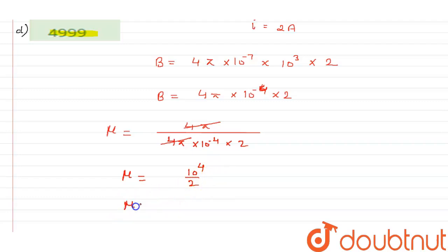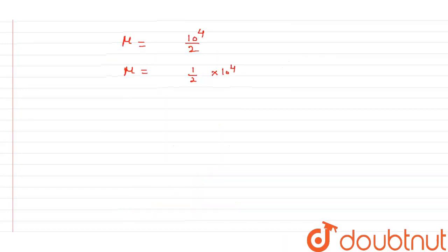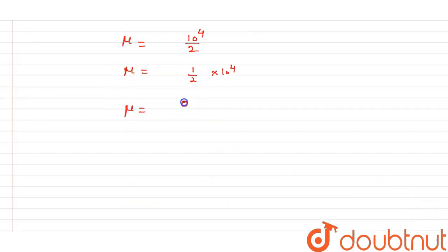Now we know that if I simply solve it, I can write 1/2 × 10⁴, and if you simplify it you will get the value will become equals to 0.5 × 10⁴.